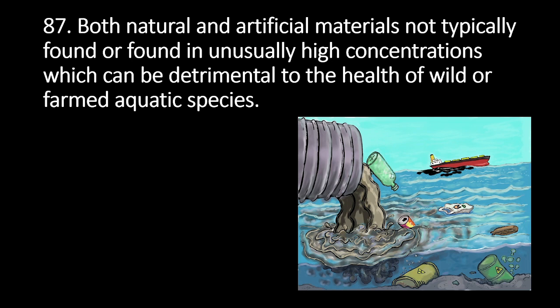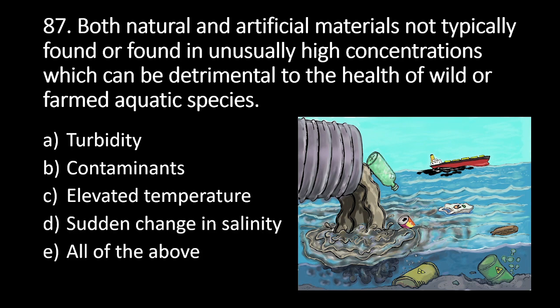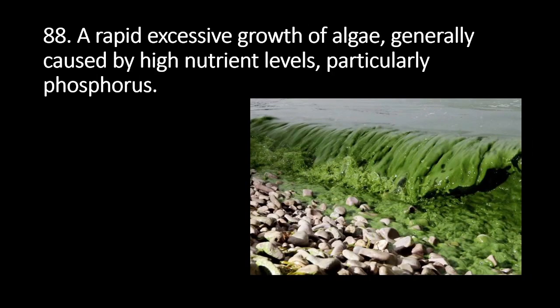Number 87: refers to both natural and artificial materials not typically found, or found in unusually high concentrations, which can be detrimental to the health of wild or farmed aquatic species. A. Turbidity, B. Contaminants, C. Elevated temperature, D. Sudden change in salinity, E. All of the above. The answer is B. Contaminants. A contaminant is either a natural or artificial material not typically found, or found in unusually high concentrations, that can be detrimental to the health of wild or farmed aquatic species.